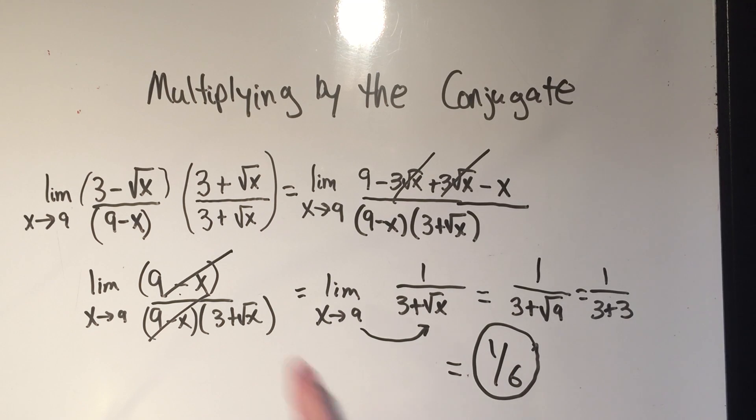So whenever you're doing limits and you see square root, you want to multiply by the conjugate. You'll do a difference of squares, simplify the numerator, and then plug in your value. That will give you your answer almost every single time. Thanks for watching.